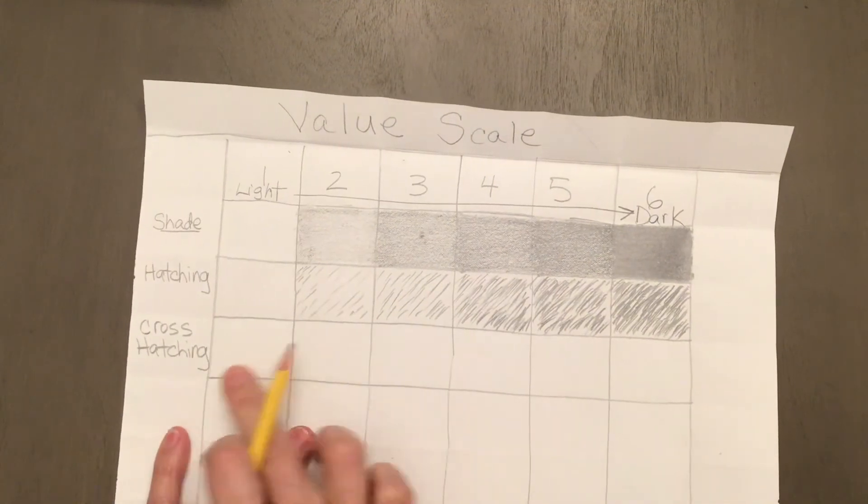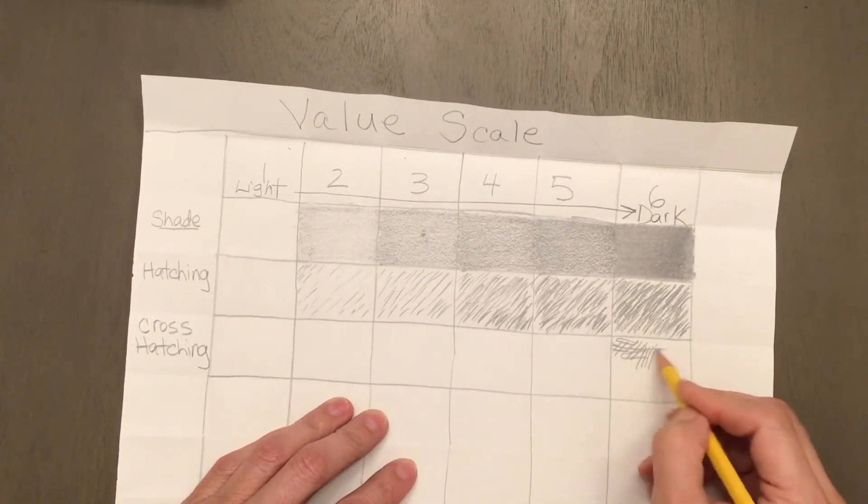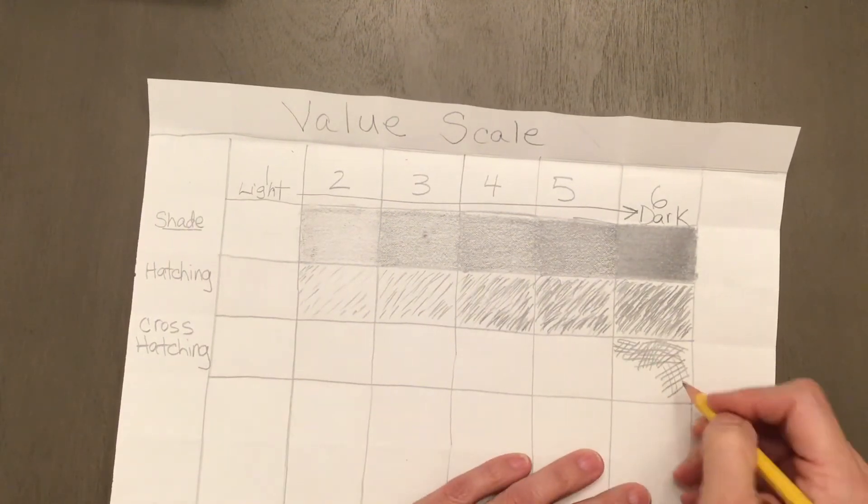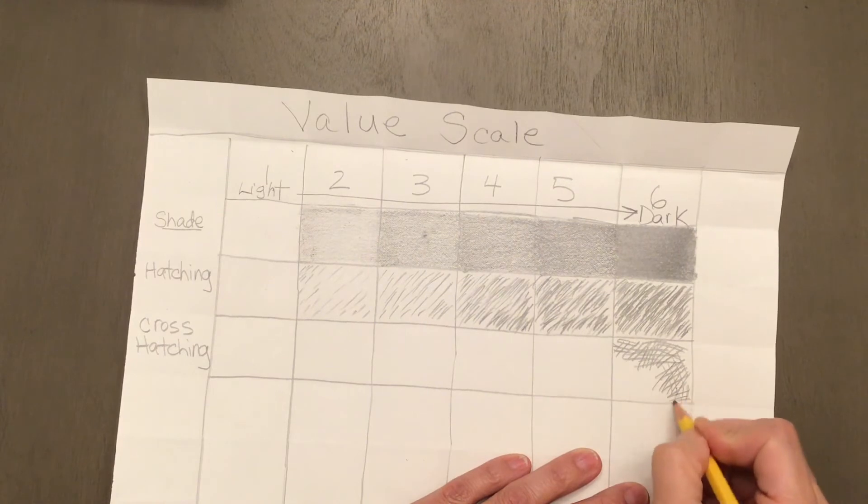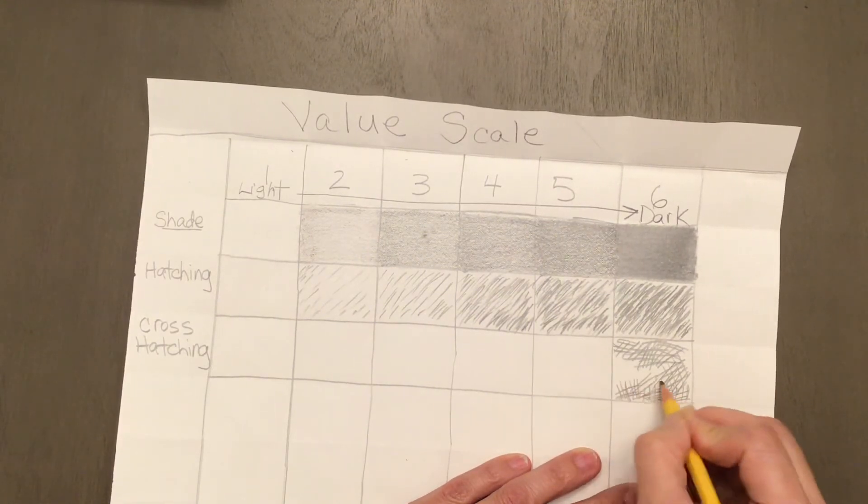Now we're going to make the cross hatching. Cross hatching is like making a hashtag close together to get a dark value and further apart to get a lighter value, like so.